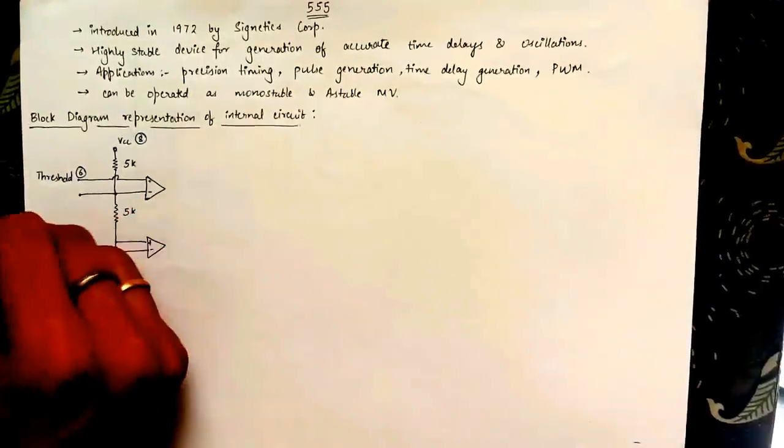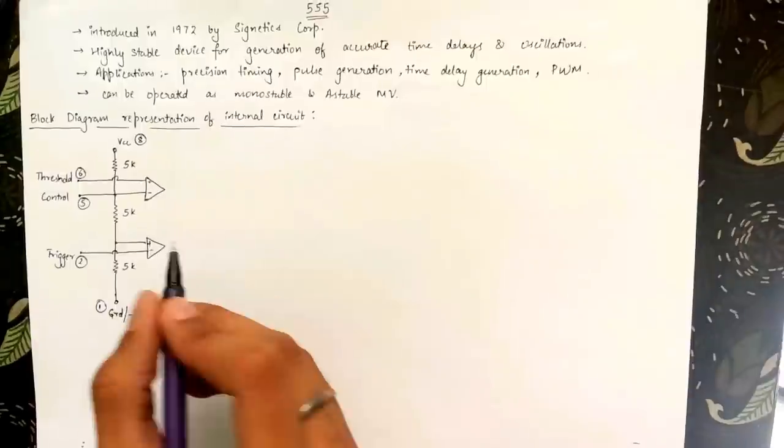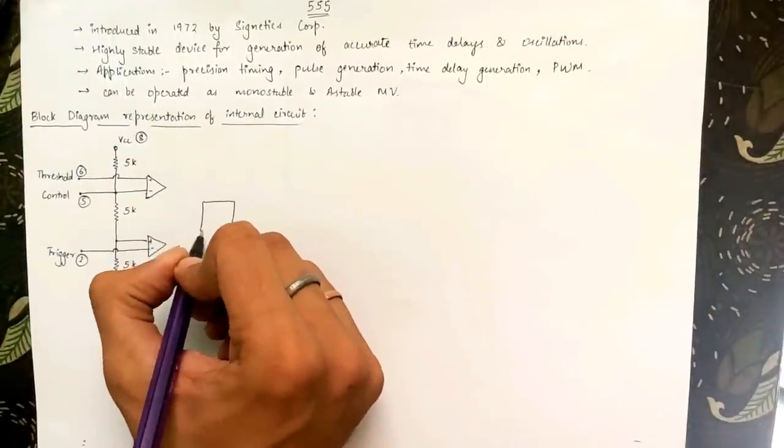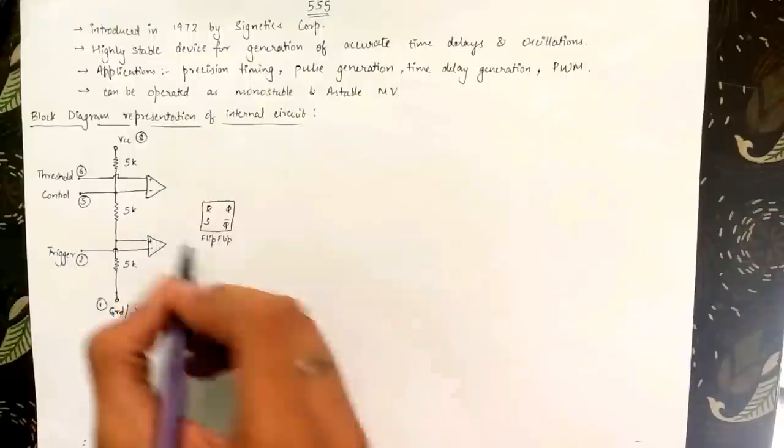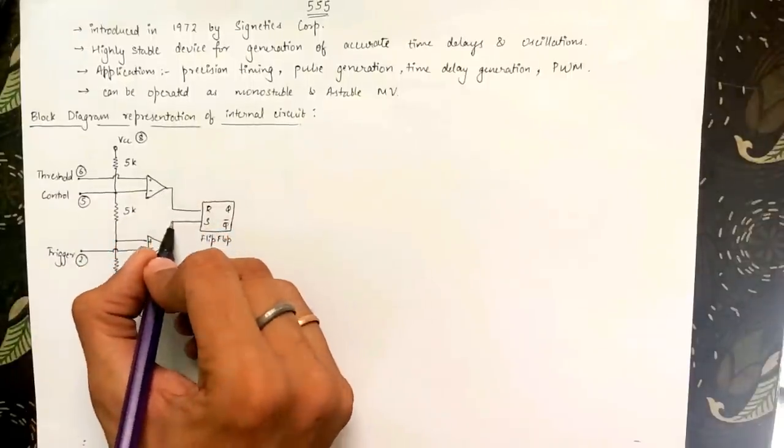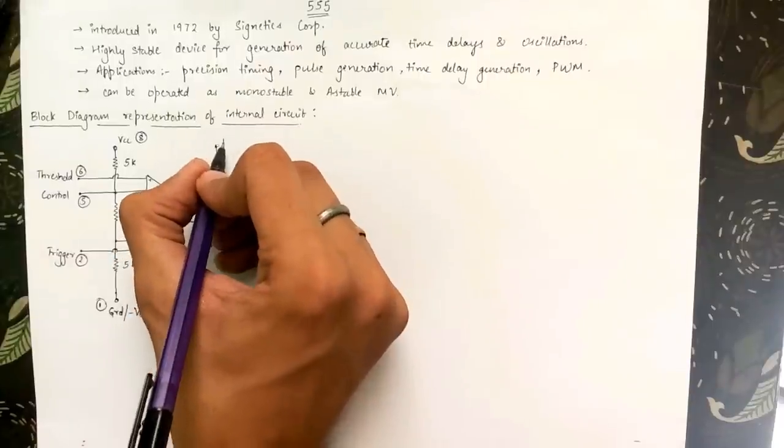The negative terminal of the first comparator is also taken out of the IC as control pin which is pin number 5. The output of the two comparators are connected to the input terminals of the RS flip flop and the reset pin of the flip flop is taken out of the IC as pin number 4.